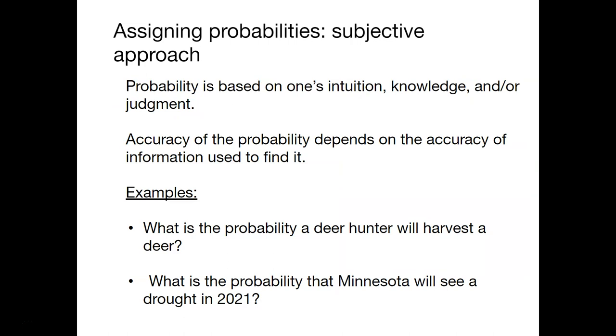Another way is a subjective approach. This is when your probability is based on your intuition, your knowledge, your judgment. Here, the accuracy of the probability depends on the accuracy of the information used to find it. What is the probability a deer hunter will harvest a deer? What is the probability Minnesota will see a drought next year? These are subjective approaches for probabilities. You need to be careful with these, especially when you hear these reported. These are not always based on data. Sometimes they make assumptions. Sometimes they don't. And oftentimes, you're dealing with much more uncertain factors in this kind of probability assignment method.